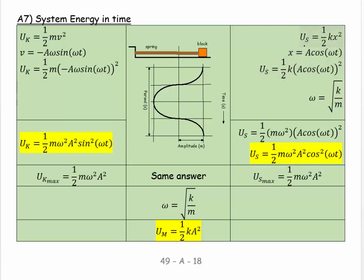For the spring potential energy, we know it's one-half k·x², and x equals A·cos(ωt). So the spring potential is one-half k·(A cos(ωt))². Remembering that ω = √(k/m), so k = mω², we substitute to get one-half m·ω²·A²·cos²(ωt).